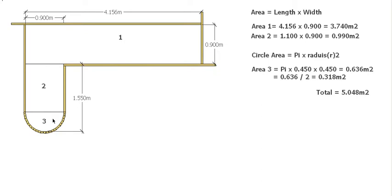Now because I've only got half the circle, I'm going to halve that. So 0.636 divided by 2 gives us 0.318. When we add all those three figures up, we get 5.048 square meters for our area of our footpath.